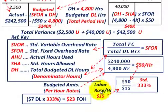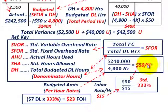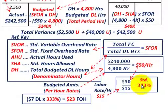If the standard labor rate is $15 per hour and the standard fixed overhead rate is $50 per hour, that gives 333% — meaning fixed overhead is 333% of the labor rate. For example, if $7 is spent in direct labor, multiply by 333% to get $23 in fixed overhead cost. Typically you work with a percentage of direct labor dollars to derive your fixed overhead amount.